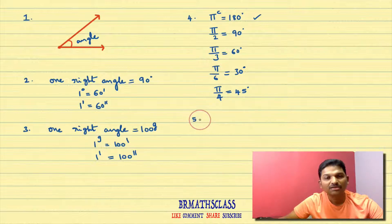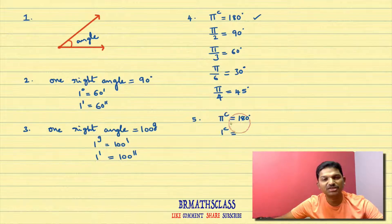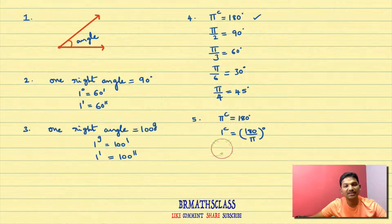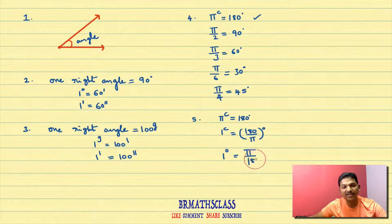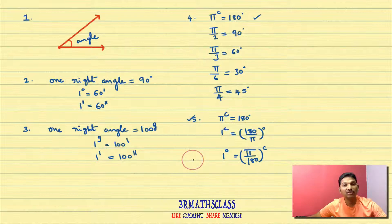From pi radians equals 180 degrees, dividing both sides by pi gives us: one radian equals 180/pi degrees. And dividing both sides by 180 gives us: one degree equals pi/180 radians. These conversions are important — in the next class we will learn how to convert degree measure into radian measure and radian measure into degree measure.